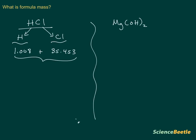Now you want to go ahead and add these two together. And so when you do that, you're going to get 36.461 grams of HCl. This here is your molar mass for this particular compound.